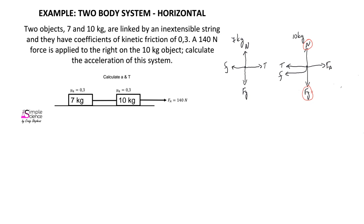Since the force of gravity and the normal force are the only two vertical forces acting on each object, the force of gravity for the 10 kilogram object is 98 newtons, and must be equal but opposite to the normal force, which is also 98 newtons. For the 7 kilogram object, the force of gravity is 68.6 newtons — that is mass times gravity — which tells us the normal force for that object is also 68.6 newtons. This allows us to calculate the friction force for each object using the formula: friction equals the coefficient multiplied by the normal force.